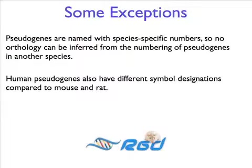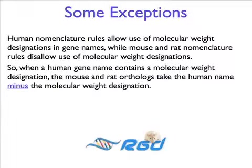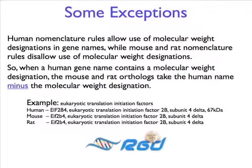Human pseudogenes also have different symbol designations compared to mouse and rat. Another exception comes from the fact that human nomenclature rules allow use of molecular weight designations in gene names, while mouse and rat nomenclature rules disallow the use of molecular weight designations. So when a human gene name contains a molecular weight designation, the mouse and rat orthologs take the human name minus the molecular weight designation. Here is the example of a translation initiation factor for which the human name contains molecular weight information, and the mouse and rat gene names have eliminated that information.